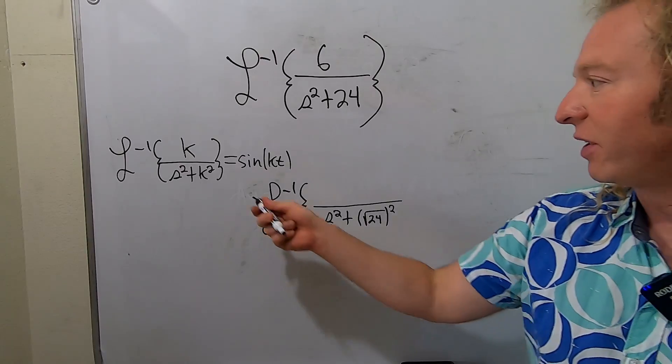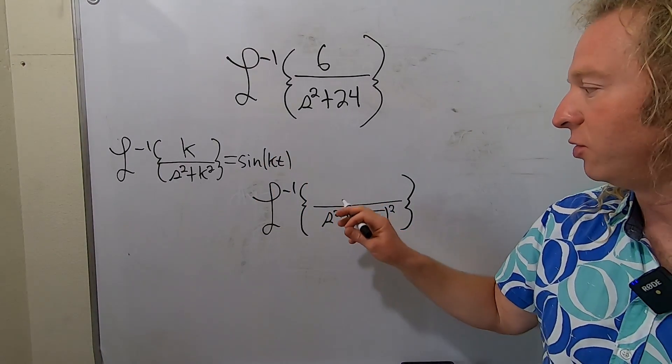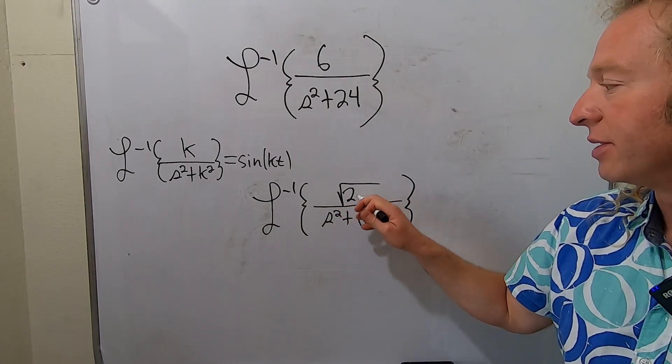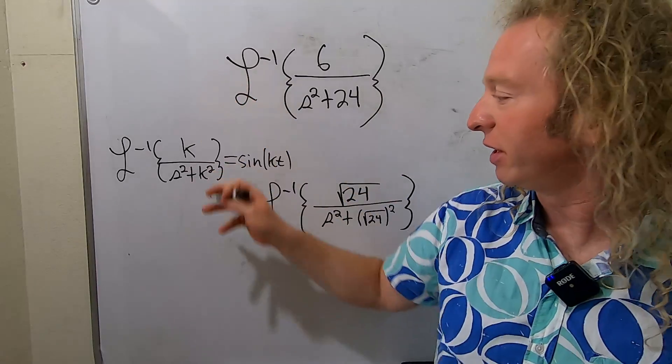We need to have a k up here also. That's the thing. What we do is we can just put it there, because we can do whatever we want as long as we make it better. I'm just going to put it there. And then the 6, you can pull it out.